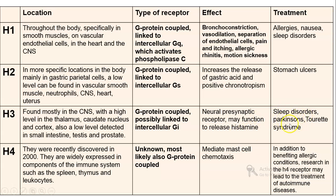H3 receptors are used for the treatment of sleep disorders, Parkinson's disease, and Tourette's syndrome. H4 receptors are widely expressed in components of the immune system such as the spleen, thymus, and leukocytes. They were recently discovered in 2000 and are most likely also G protein-coupled receptors. The effect of H4 receptors is to mediate mast cell chemotaxis.